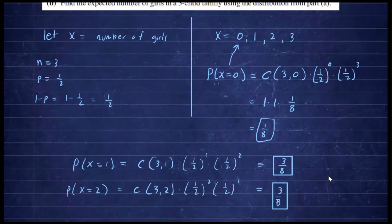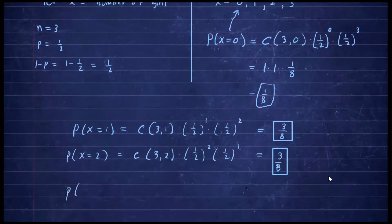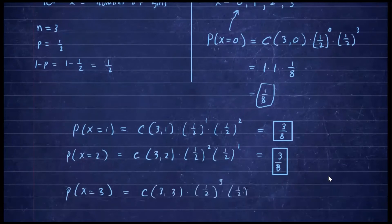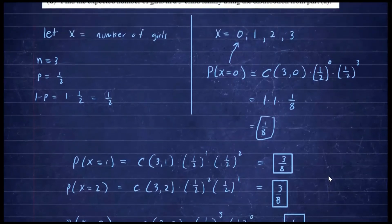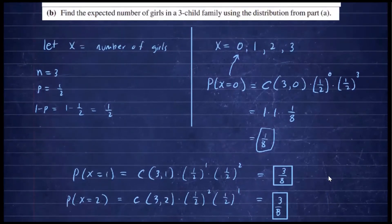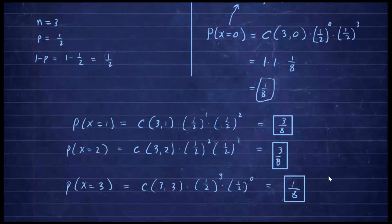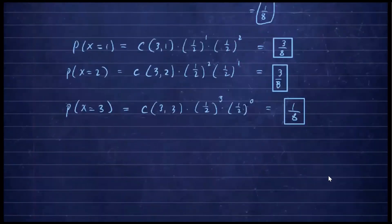We have one more to go. The probability that all three children are girls is C(3,3) times (1/2)^3 times (1/2)^0, which equals one eighth. So the probabilities for random variable x — which can take values zero, one, two, and three — are one eighth, three eighths, three eighths, and one eighth respectively.